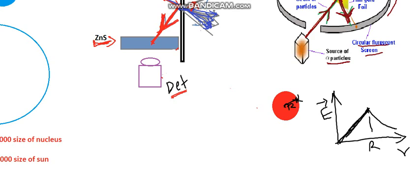Inside the distribution, the electric field is proportional to r, and outside it is proportional to 1 over r squared. Rutherford was thinking: what will be the electric field if you have a charge distribution of the size of an atom — a spherical charge distribution of atomic size? Then you can calculate what electric field such a distribution produces.